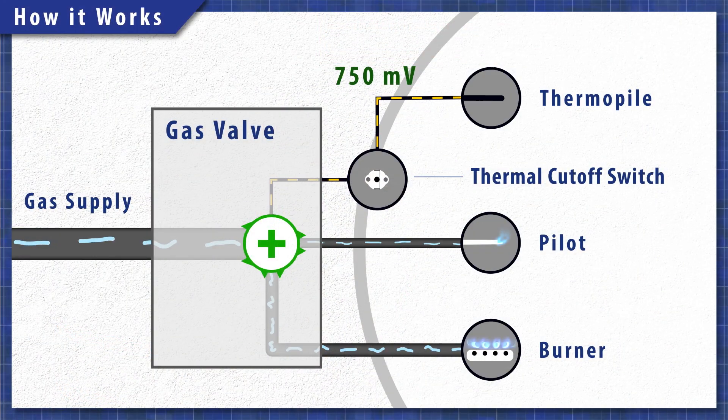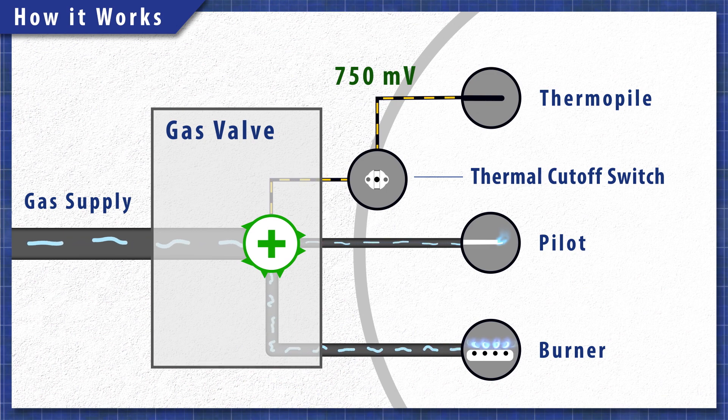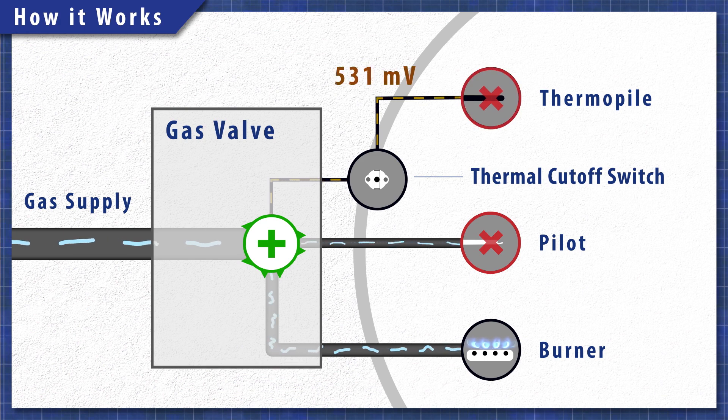The thermopile also acts as a safety switch. If the pilot light goes out, then the thermopile will cool down. The voltage will drop and the gas valve will shut off. This prevents unburnt gas from being released into your home.